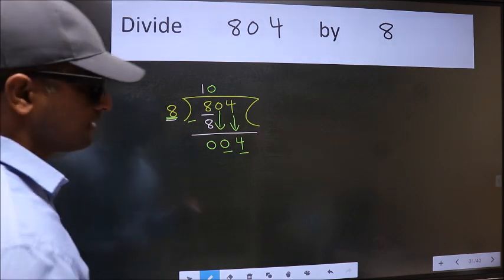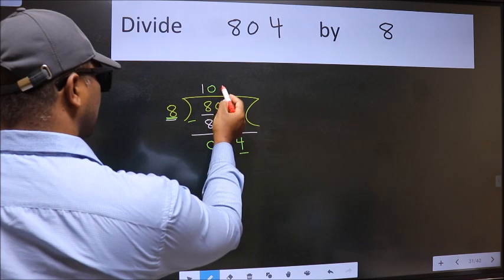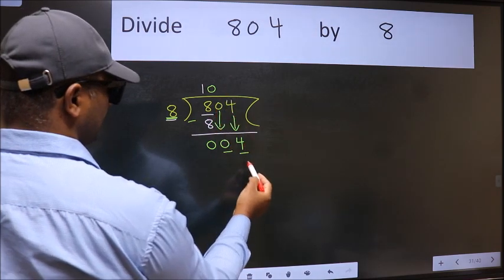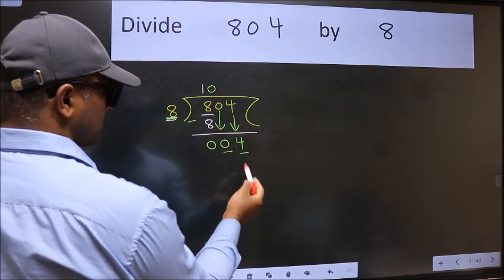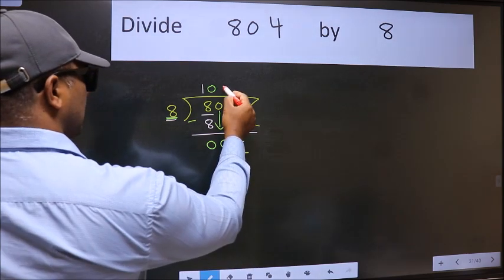what we should think of doing is which number should we take here. If I take 1, we will get 8, but 8 is larger than 4. So what we do is we take 0.